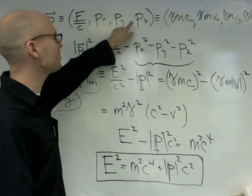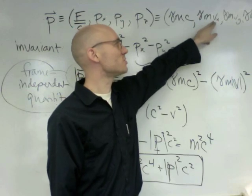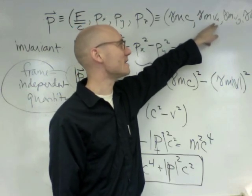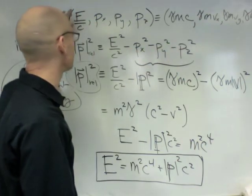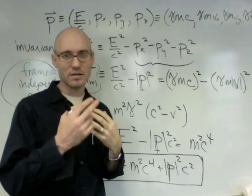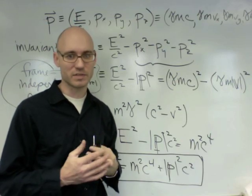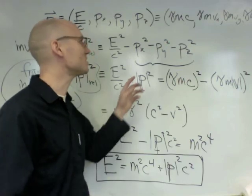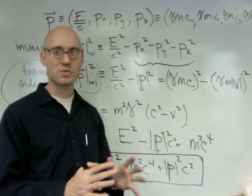Because these momentum components reduce to the classical non-relativistic momentum at low speeds. And this energy expression reduces to the low speed energy expressions we've been using successfully in non-relativistic mechanics. So these expressions, though they're a little odd, they have the right low speed limits.